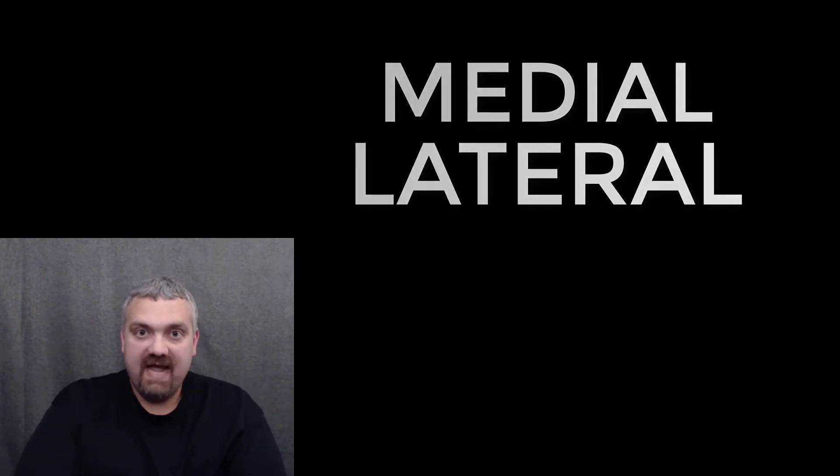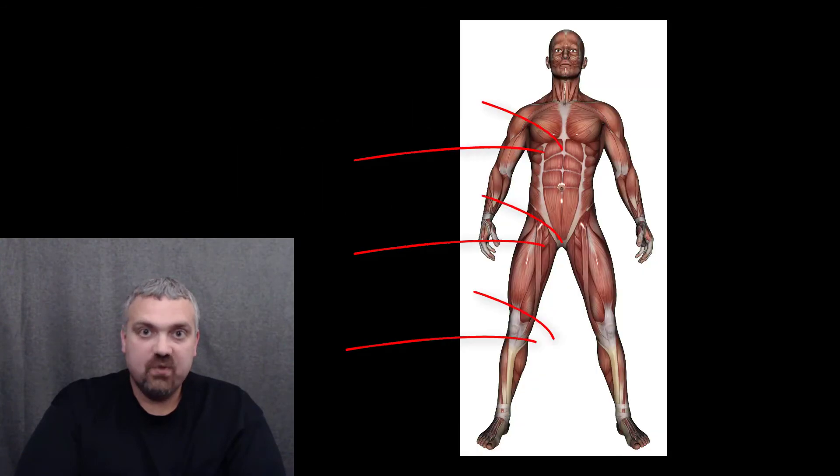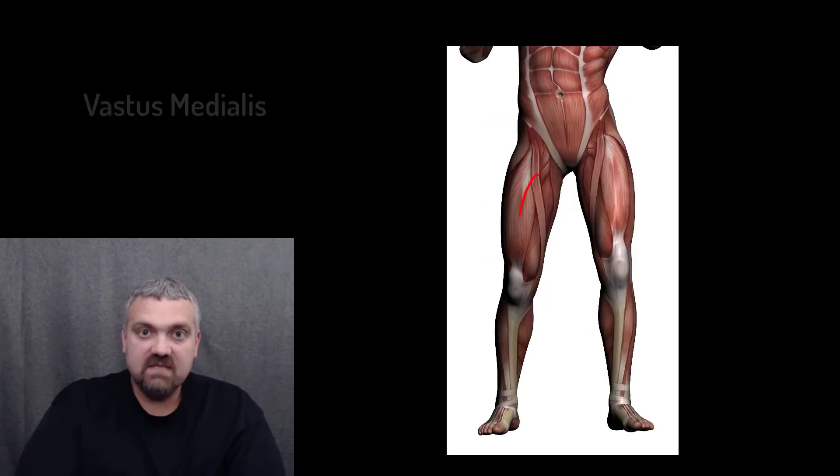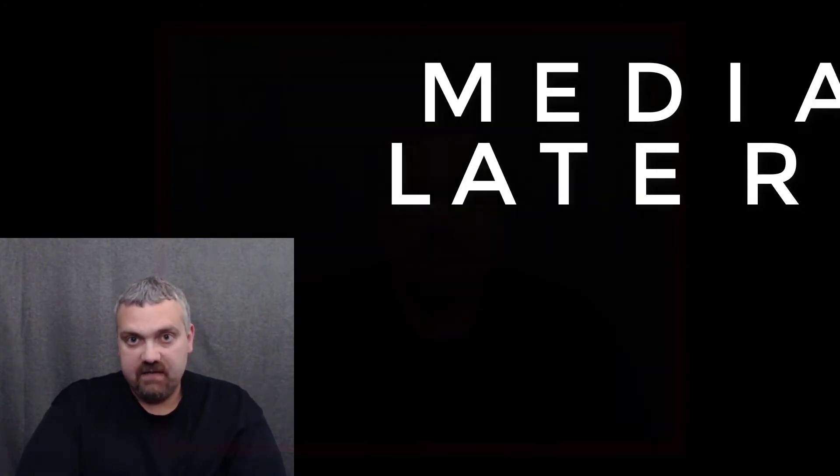Lastly, medial versus lateral. So medial means towards the midline. Lateral means away from the midline. Two key examples here would be the vastus medialis muscle and the vastus lateralis muscle. So vastus means great. These are large muscles in your thigh. They make up two of the four quadriceps muscles. The vastus medialis on the inside. Vastus lateralis on the outside.